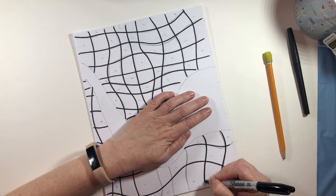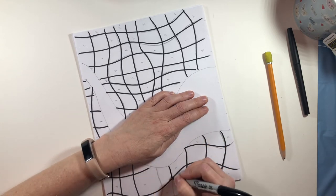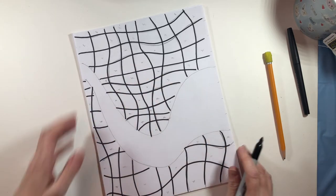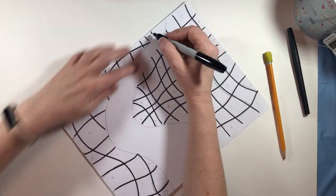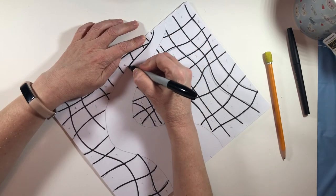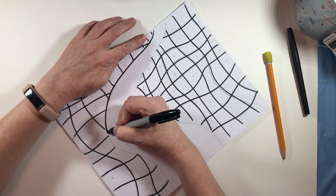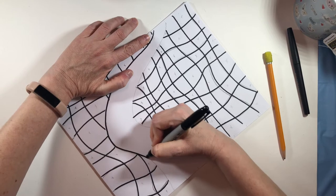So I am going to, there we go. That's done. I do want to go ahead and outline this too just so when I'm coloring around it I don't get my marker inside.